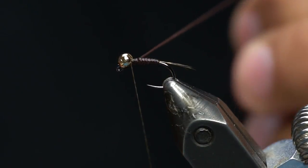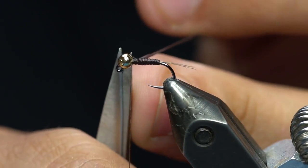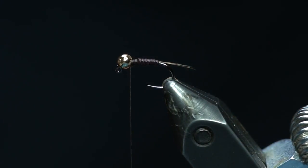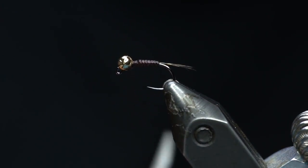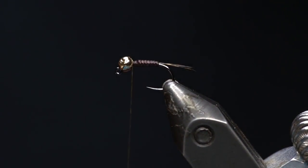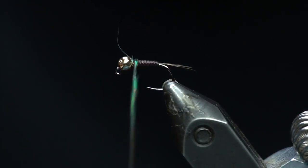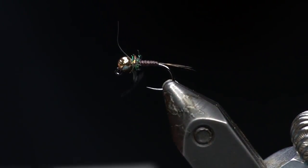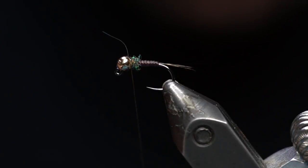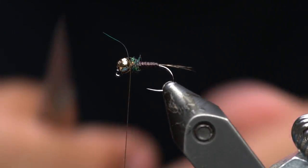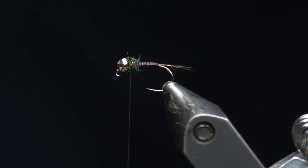And we'll go ahead and tie that off right there with enough space to dub in a thorax. And if you put some nice high tension wraps, you can pull this material really tight before you cut and it'll kind of suck back into the thread wraps and leave you a nice clean body there. And for dubbing, you can never go wrong with a little peacock ice dub. I'm going to dub a little peacock thorax there. Cut out that little fiber for the people with OCD.